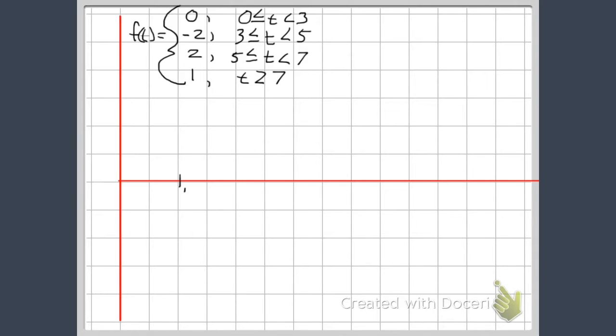So when we're graphing this as a unit step function, I first need my tick marks. And then from zero to three, we're at zero.